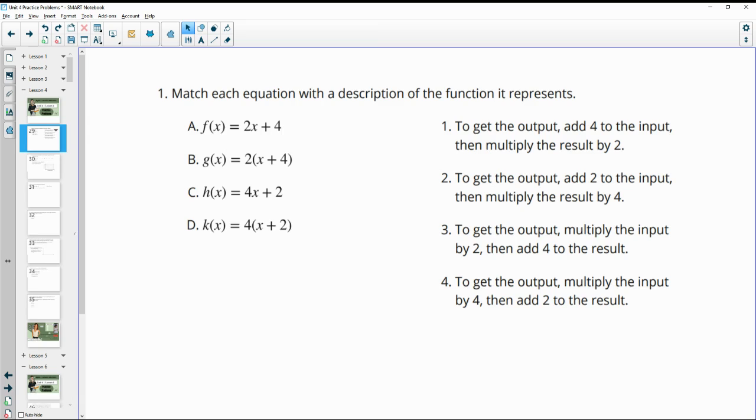Number one asks us to match each equation with a description of the function it represents. So if we take a look at each of these descriptions, it says to get the output, add 4 to the input. So we're going to call our input x and we're going to add 4 to that. And it says then multiply the result by 2, which means we need to multiply this quantity here after we add them together, we need to multiply by 2. So we want to look for x plus 4 in parentheses times 2 and that's letter B. So this one matches number one.